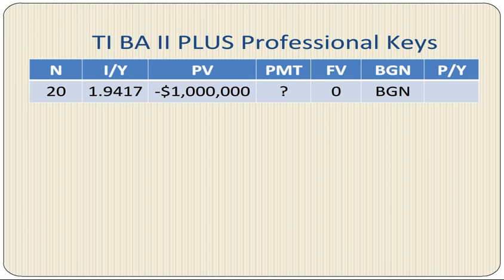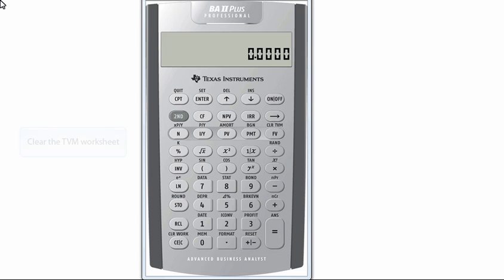Since this is an annuity due, we set the mode to begin. Payment per year equals 1 to reflect annual withdrawals. Now let's watch the calculator keys.